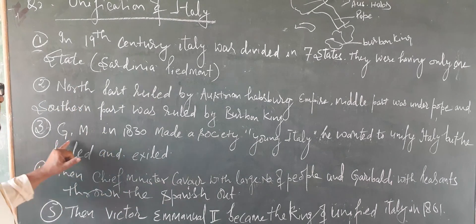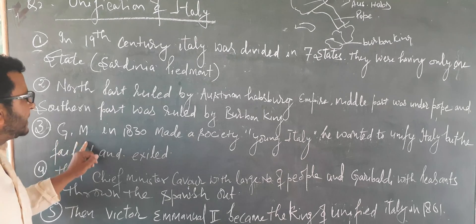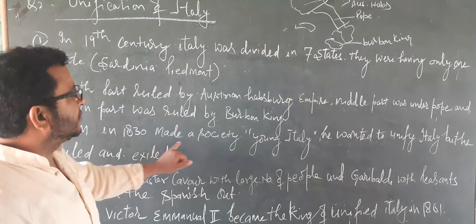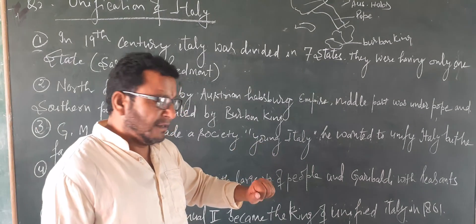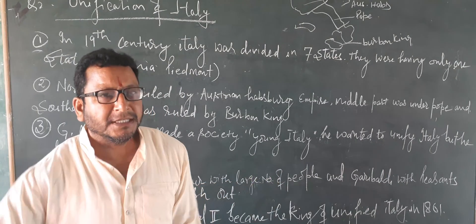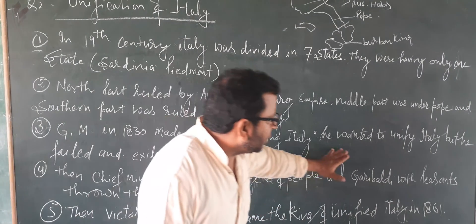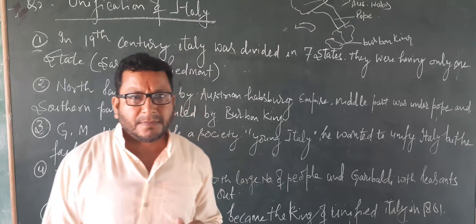Third point is Giuseppe Mazzini. Giuseppe Mazzini in 1813 played a role — he formed a society called Young Italy. He wanted to unify Italy.